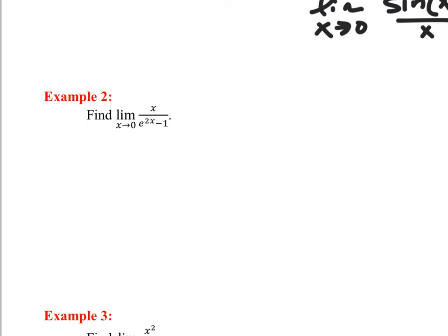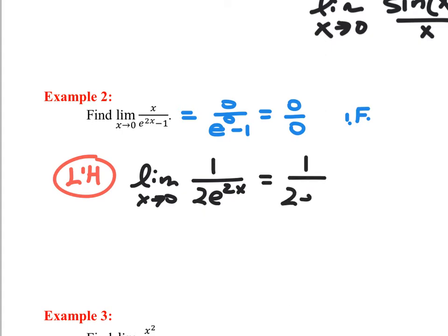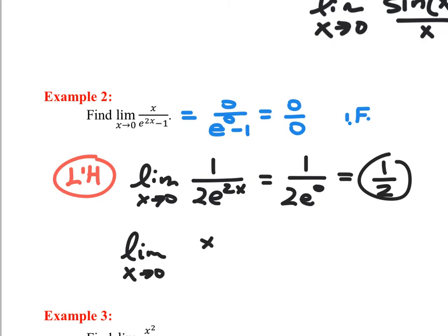Let's try another example. Direct substitution gives zero over e to the zero minus one, which is zero over zero — an indeterminate form. Therefore L'Hopital's Rule applies. Taking the derivative of the top and bottom: the limit as x goes to zero of 1 over 2e^(2x). Direct substitution of zero gives one over two times e to the zero. Since e to the zero is one, we get one half. So the limit as x goes to zero of x over (e^(2x) − 1) equals one half.